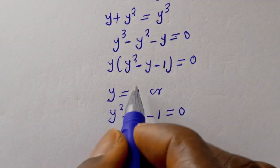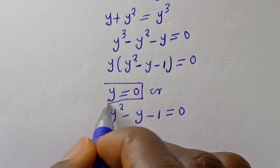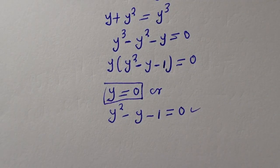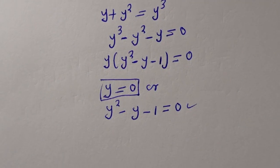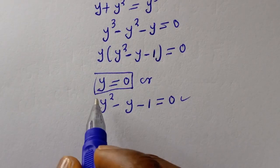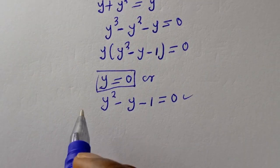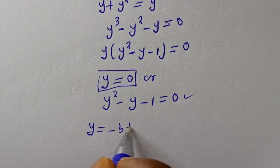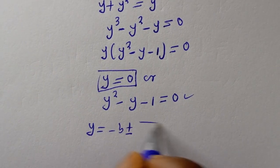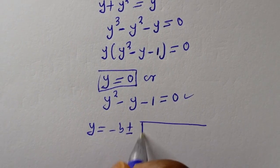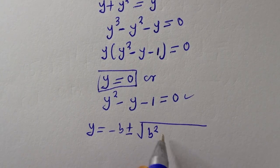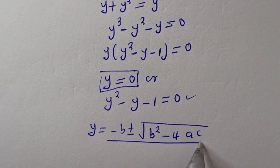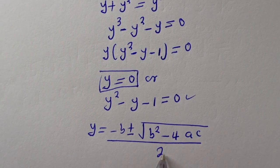From the first factor, y equals 0. From the second factor, we have the quadratic y squared minus y minus 1 equals 0. Using the quadratic general formula: y equals negative b plus or minus square root of b squared minus 4ac, all over 2a.